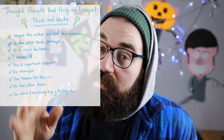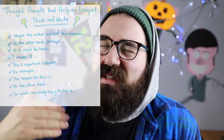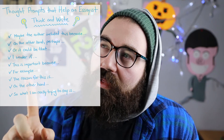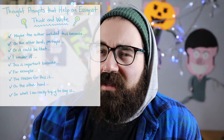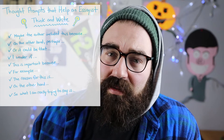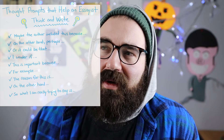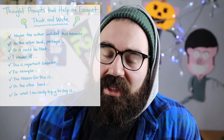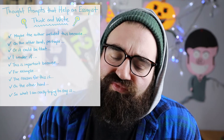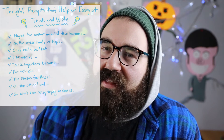I wonder why the author — Bambara, that's their last name — included this detail about Squeaky, that she just wants to knock people down. Maybe the author wants to show us that Squeaky's really, really angry over how people treat her brother. On the other hand, perhaps the author Bambara is really showing us that Squeaky loves Raymond — she loves him so much that she's willing to fight for him.